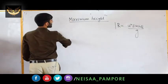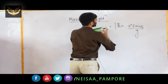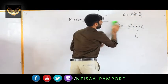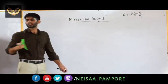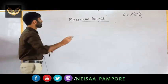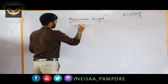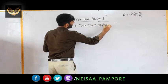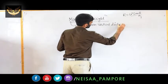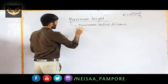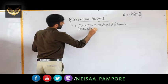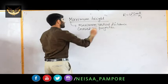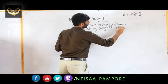Now let us discuss the maximum height attained. Maximum height is the maximum vertical distance covered by the projectile during its motion.